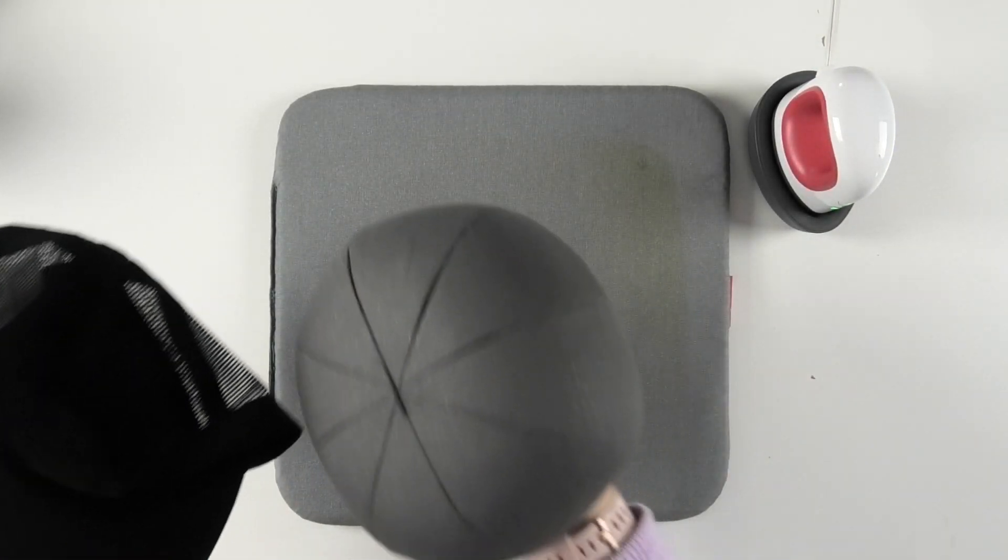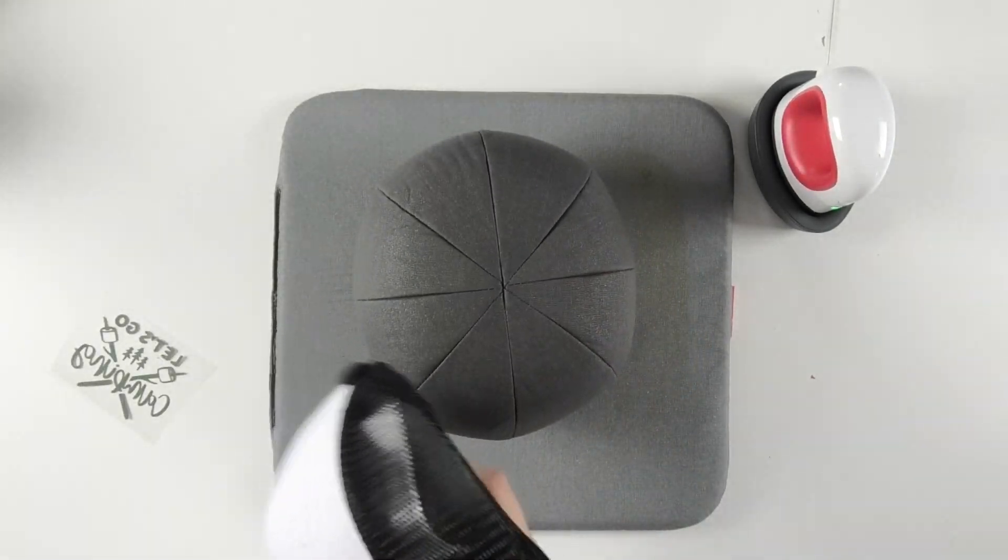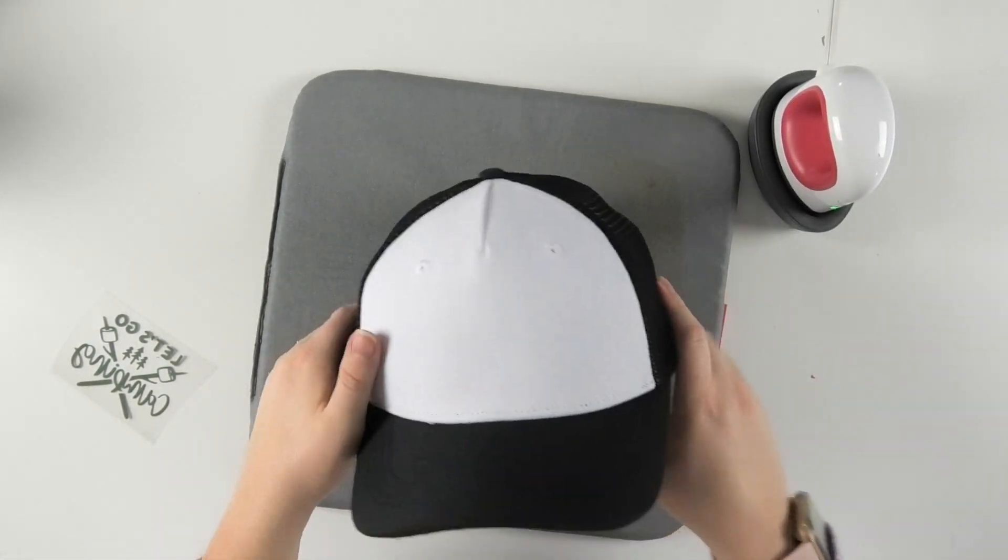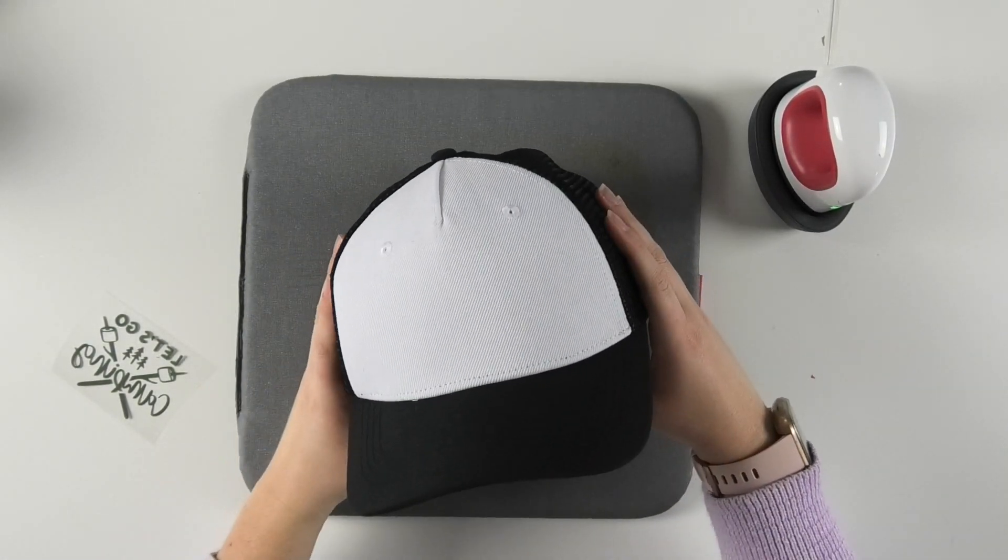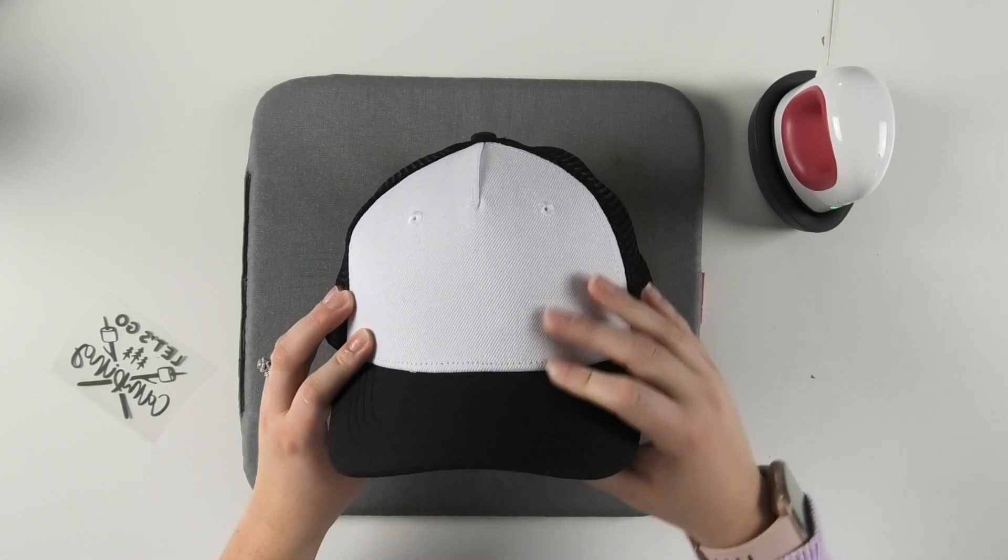So to get started, I do recommend stuffing your hat with something. I'm going to be using the little hat form that comes with the Cricut hat press, but if you needed to, you could use something like a bunch of kitchen towels or maybe even a bath towel to stuff your hat and make it a little bit more firm. And before I stick my HTV decal to my hat, I am going to lint roll away any other lint.